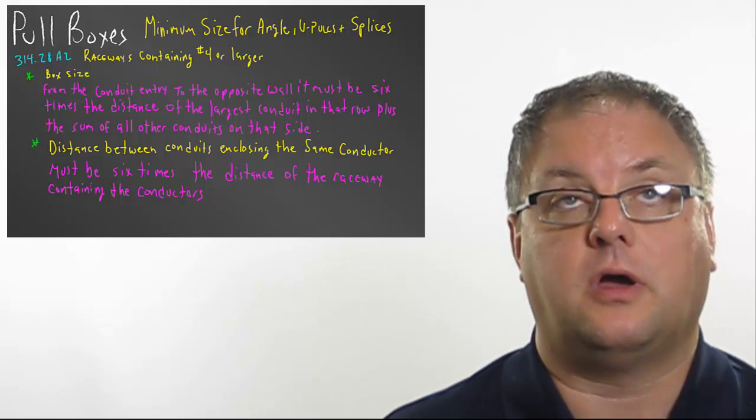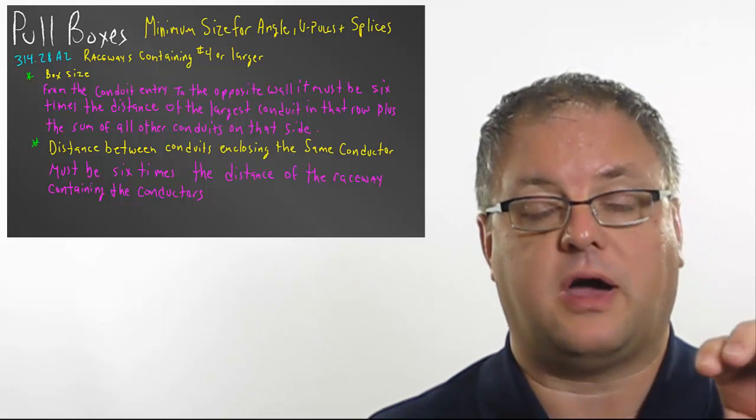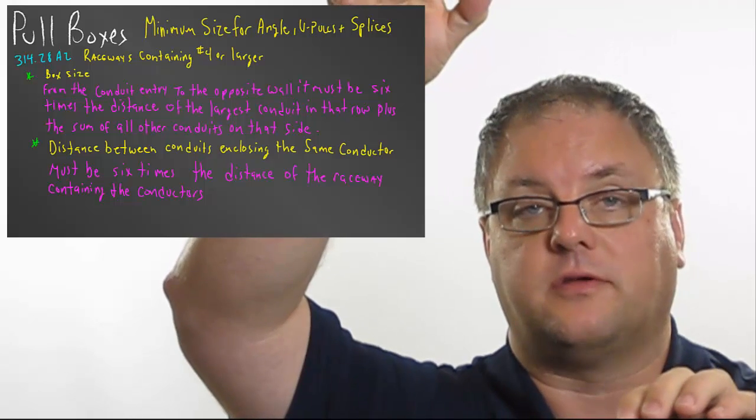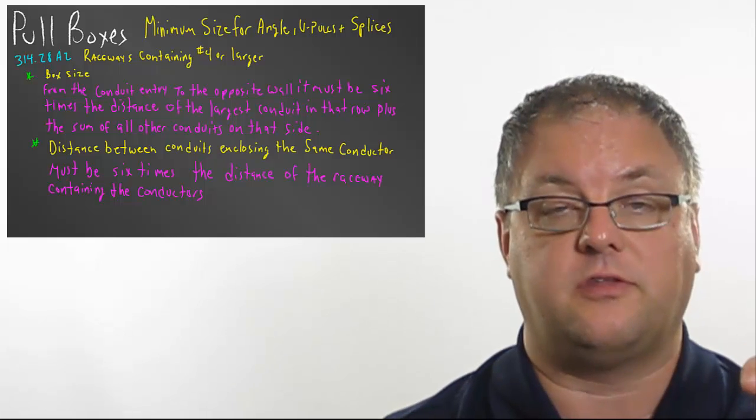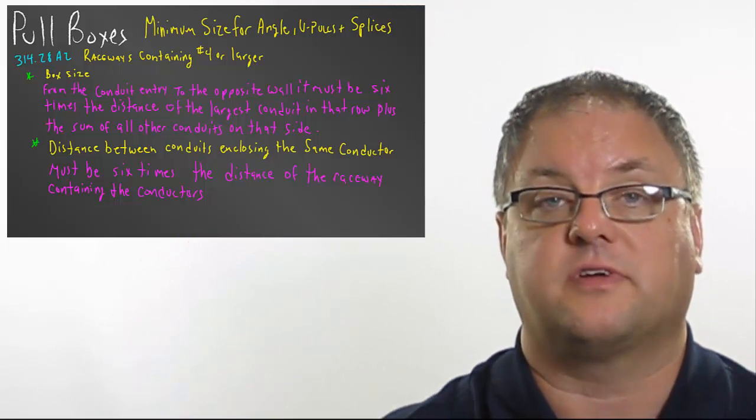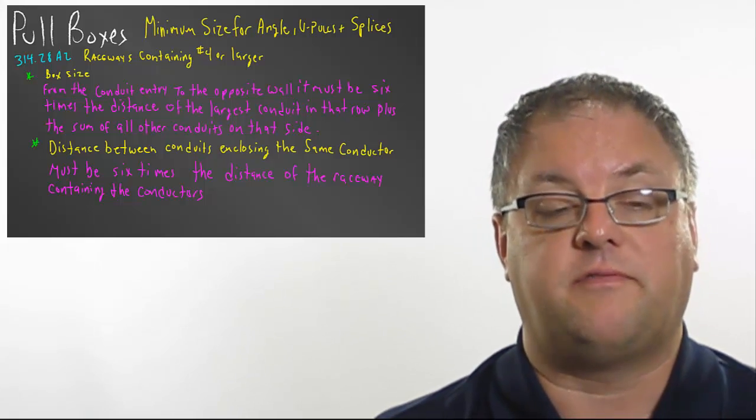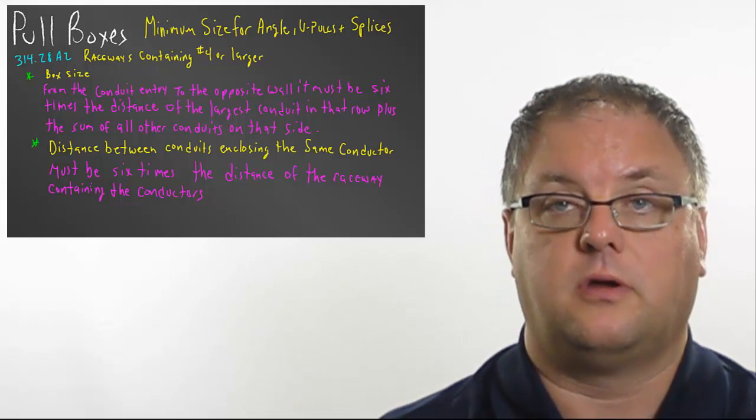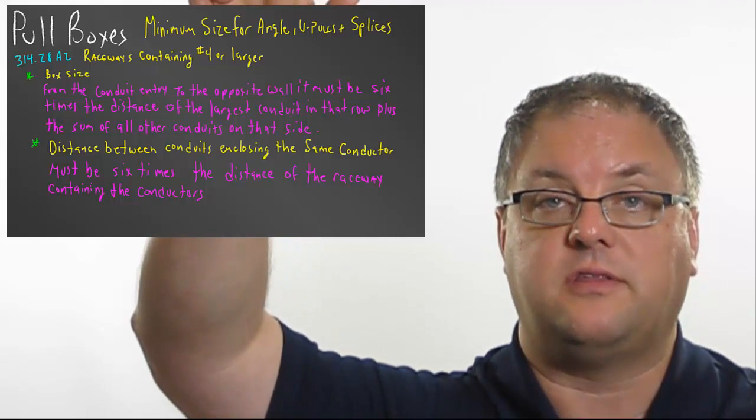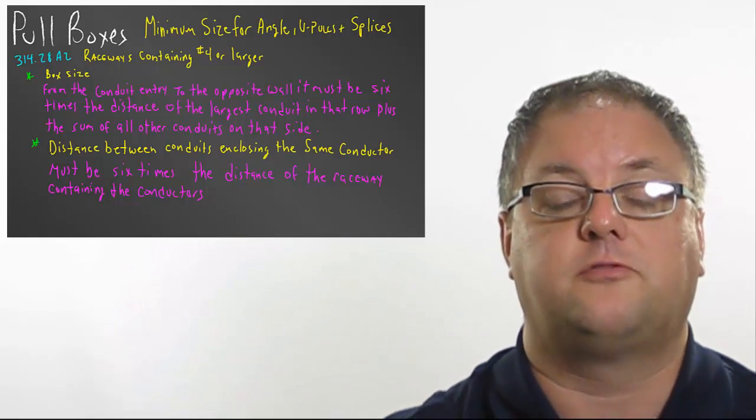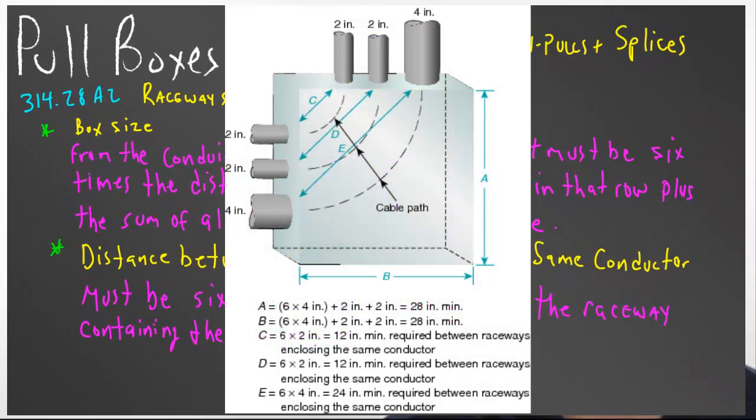Now when you get to another thing that we have to do especially with angle pulls where you come in the box on this side and you come out the box on the other, then we have to maintain a spacing between this conduit and that conduit of six times the size of the conduit that enclosed the same conductor. So if I have a 4-inch conduit coming in here and a 4-inch conduit going out of this box, I then have to maintain a straight line space between those two conduits of 24 inches. In this example you'll see a 4-inch and two 2-inchers in that box and because they come in sides that are 90 degrees to each other that box ends up being square and if you take 6 times 4 plus the two 2-inch conduits now I have to have a 28 by 28 inch box to be able to have an angle pull in there with those conduits involved.